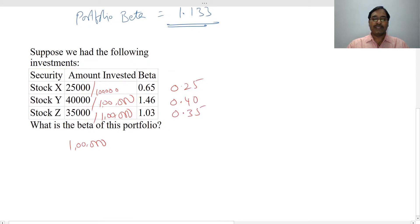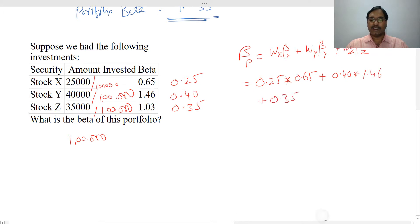Now using these weights, you can calculate the portfolio beta. So beta of a portfolio equals weight of X times beta of X plus weight of Y times beta of Y plus weight of Z times beta of Z. So this equals 0.25 into 0.65 plus 0.40 into 1.46 plus 0.35 into 1.03.